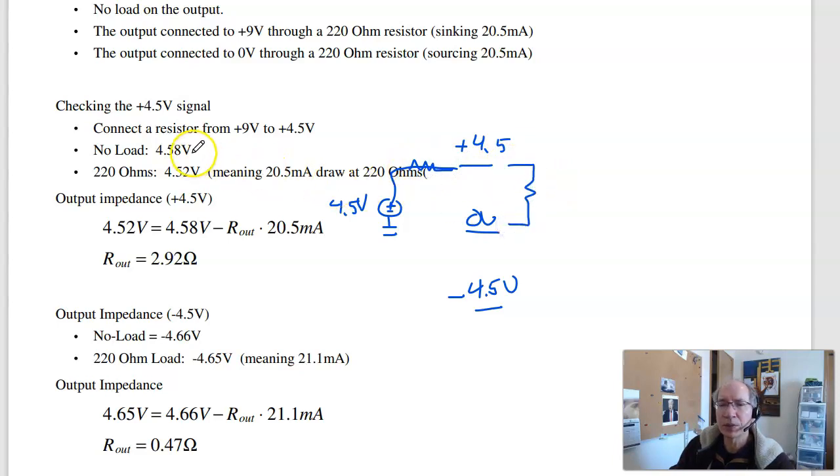When I connect this to 220 ohms, the voltage drops. It goes from 4.58 volts to 4.52 volts. What that means is that I'm drawing 20.5 milliamps. That's 4.52 volts over 220 ohms. When I do that, the voltage drops by 0.06 volts. From V equals IR, that means this looks like a 2.9 ohm resistor.